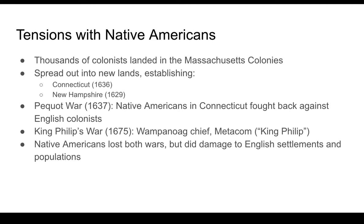Tension with Native Americans flared up in two famous conflicts. There's the Pequot War in 1637 in Connecticut, when the Native Americans tried to resist the encroachment of these Europeans. There's also King Philip's War, when the Wampanoag chief Metacom — whom the English called King Philip — tried to stop the spread of English colonists into Native American land. Both cases, the Native Americans lost, though in King Philip's War an estimated 10% of male colonists died and many settlements were destroyed. They were ultimately outnumbered and outgunned.